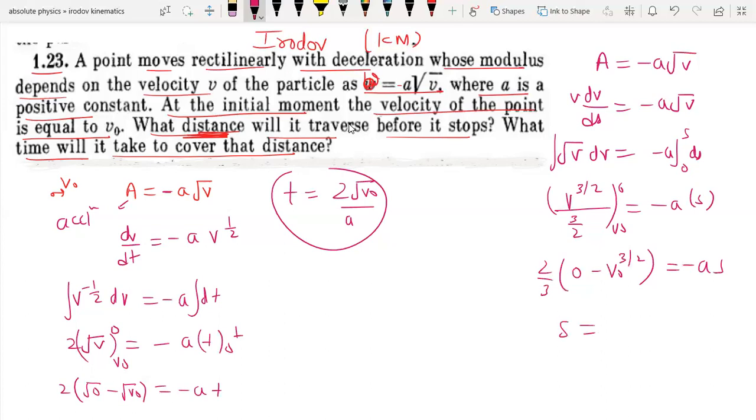So S is equal to 2 by 3 A, V0 to power 3 by 2. This is the distance the particle will travel before coming to rest. So that was an easy question. We just took the equation, integrated it twice, and found the time and distance traveled. And this is how we have solved this question, thanks for watching.